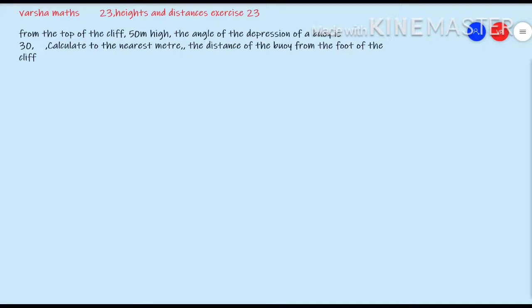Now let's go to the problem. This is the second question on Heights and Distances — a very interesting and simple problem. From the top of a cliff of 50 meter height, the angle of depression of a boy is 30 degrees. Calculate to the nearest meter the distance of the boy from the foot of the cliff.